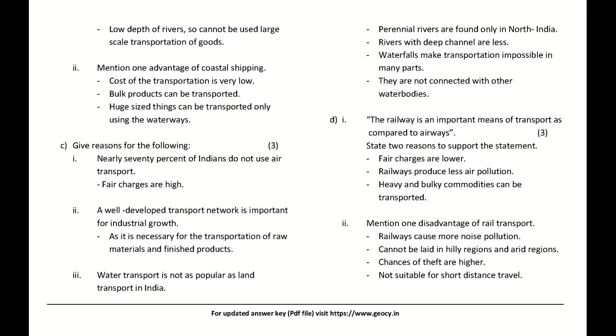Railways are an important means of transport compared to airways. State two reasons: Fare charges are lower, railways produce less air pollution, and heavy and bulky commodities can be transported. Mention one disadvantage of rail transport: Railways cause more noise pollution, cannot be laid in hilly or arid regions, chances of theft are higher, and not suitable for short-distance travel.